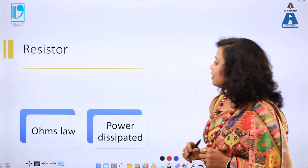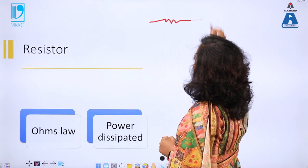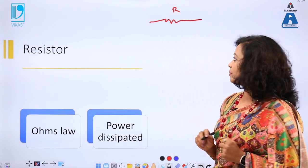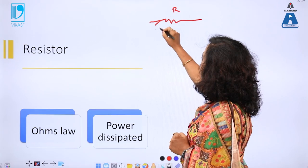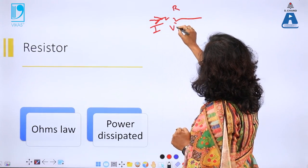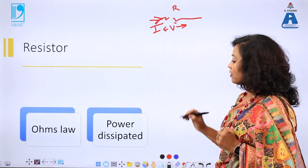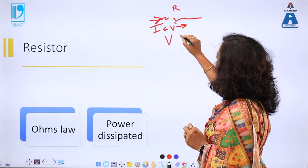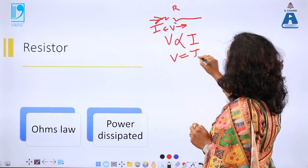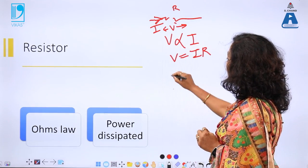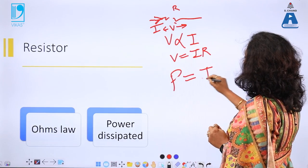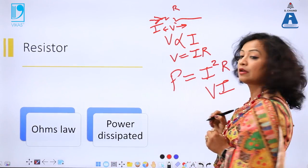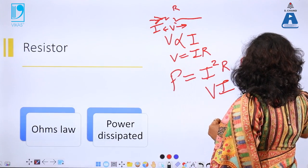Let me start with the first topic: the resistor, represented by R. This resistor is governed by Ohm's Law, and we'll discuss power dissipation. Ohm's Law states: for a current-carrying resistor with current I and voltage V across it, V is directly proportional to I, or V = IR. Power dissipation in a resistor is given by I²R or V×I, measured in watts or kilowatts.